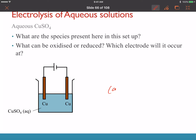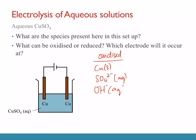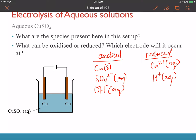So what can be oxidized: copper metal, sulfate, and hydroxide. What can be reduced will be the cations — Cu2+ can gain electrons, and H+ can also gain electrons. Reduction is to gain electrons, and only cations can gain electrons. So we have Cu2+ and H+ as candidates for reduction.